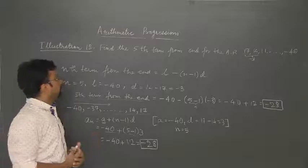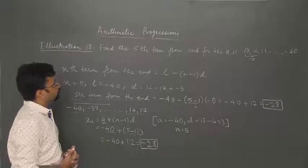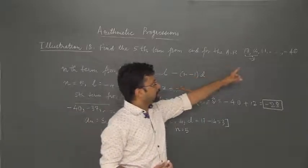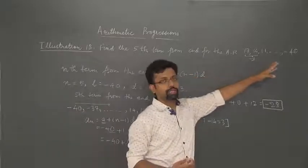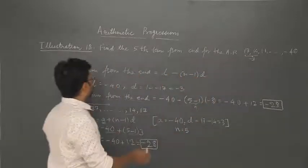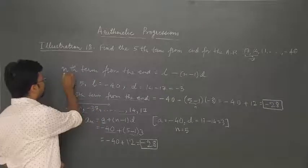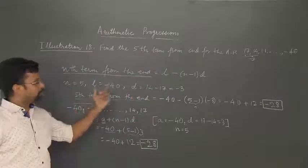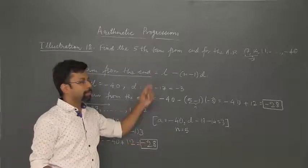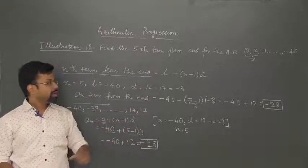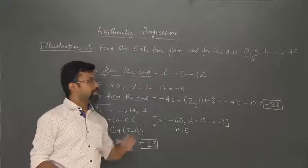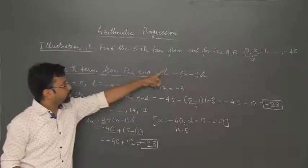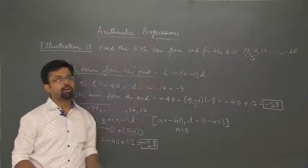The example says we have to find the fifth term from the end for the given AP: 17, 14, 11, going on to minus 40. For the given AP, the nth term from the end formula is L minus (N minus 1) into D, where L is the last term, N is the value of the term we have to find, and here we have to find the fifth term, so N will be 5, and D is the common difference.